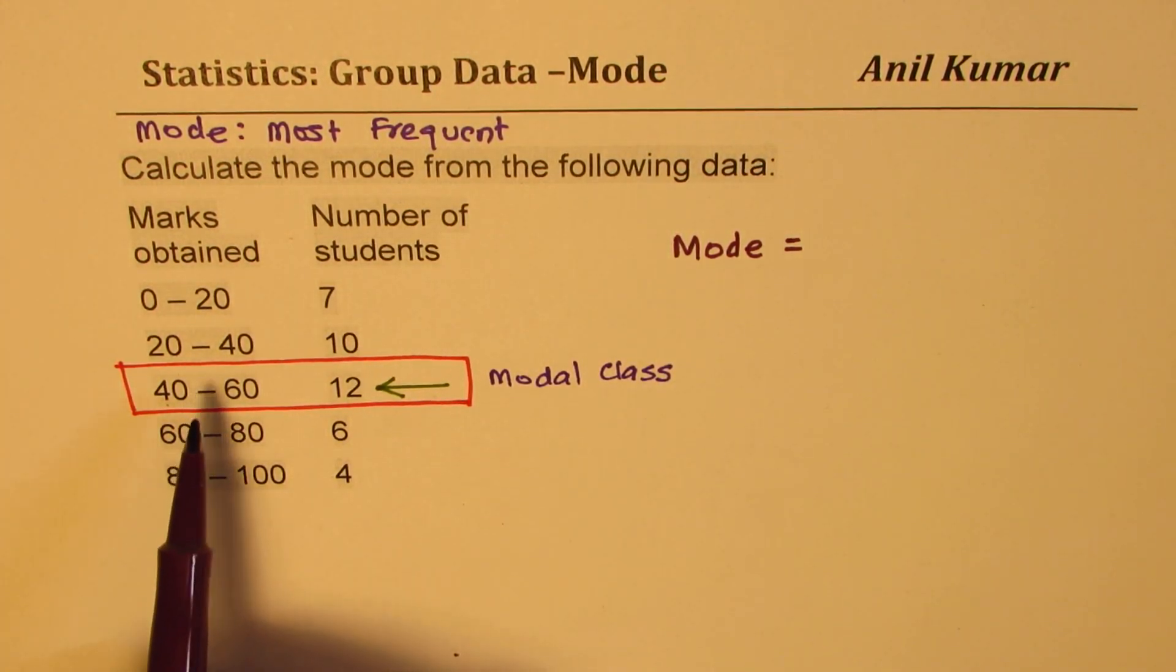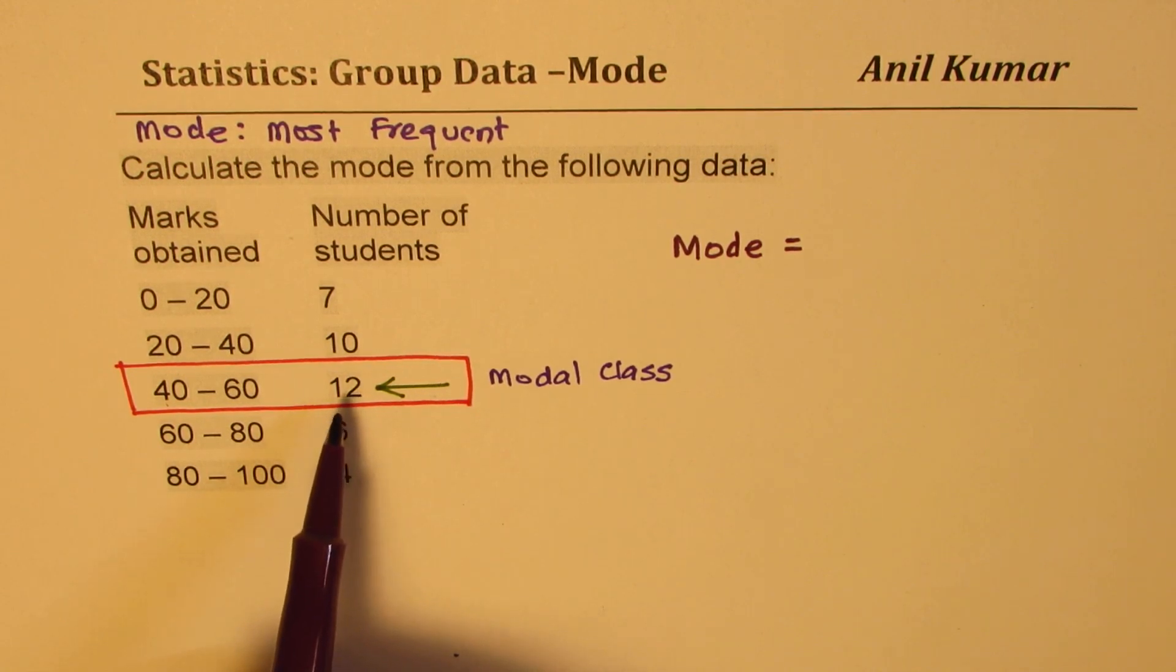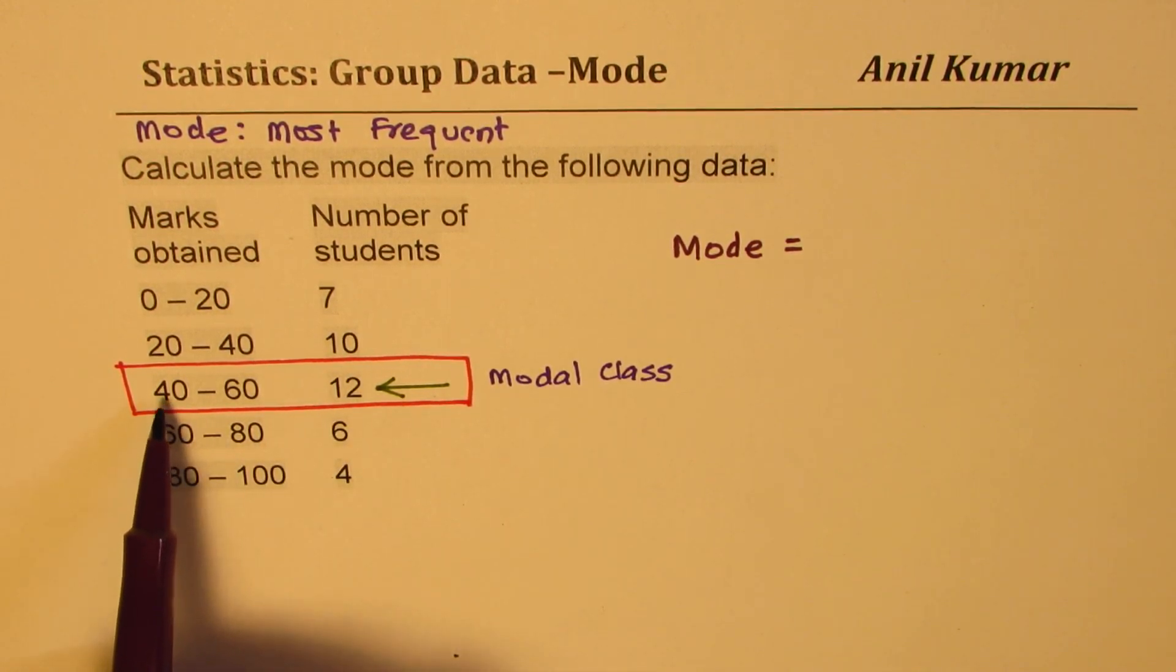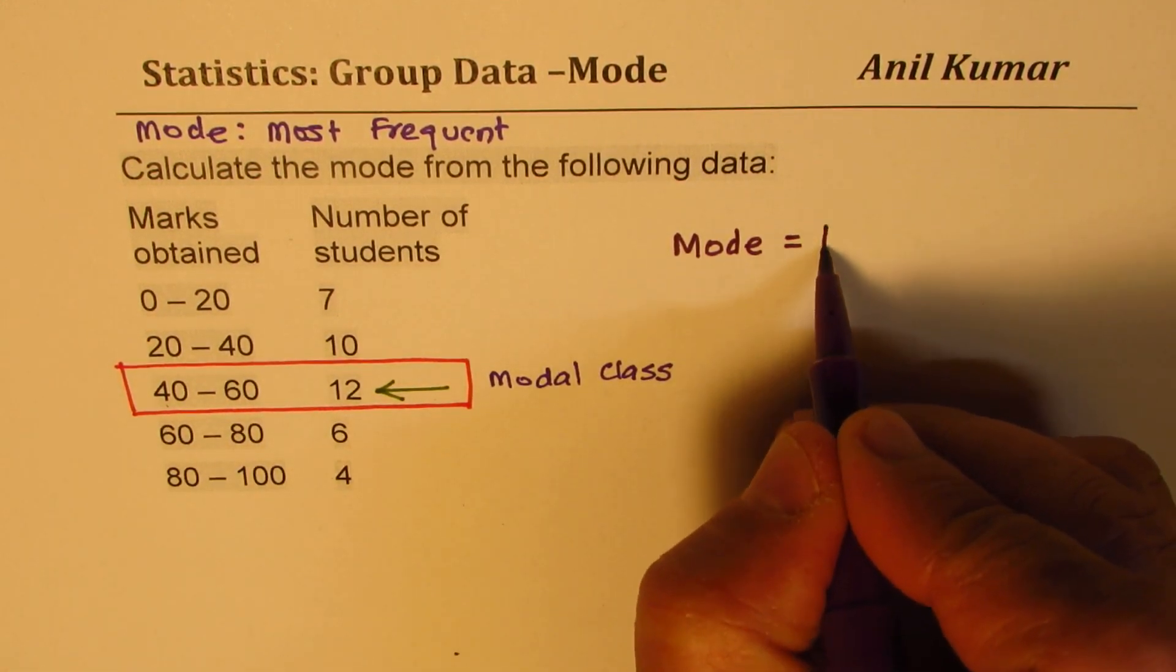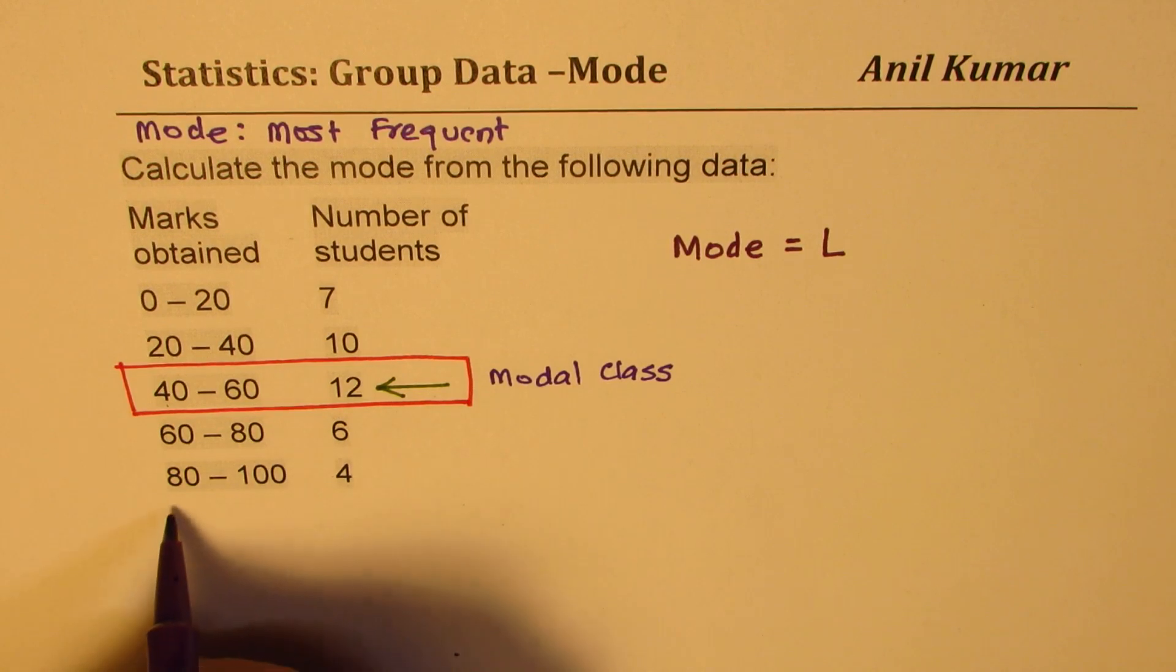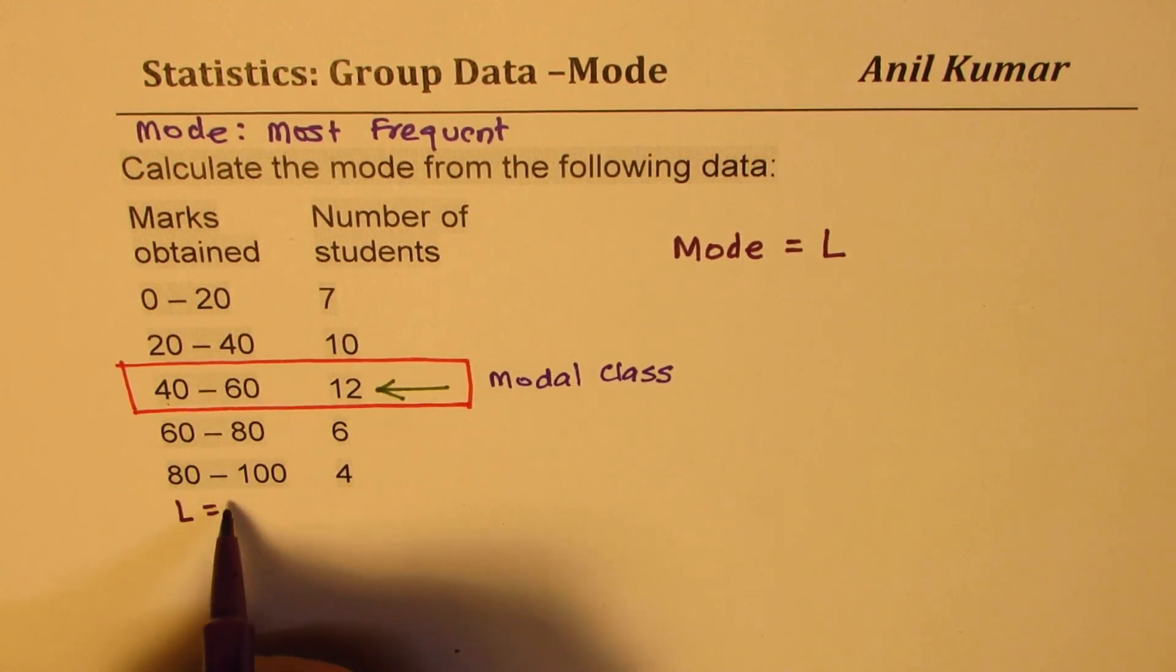So the lowest limit for us is 40 in this case. So in our case, L, the lowest limit is 40. The number shown here. So it is definitely either 40 or higher than that.